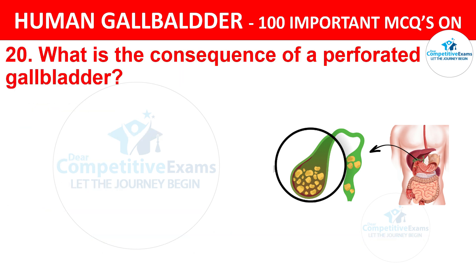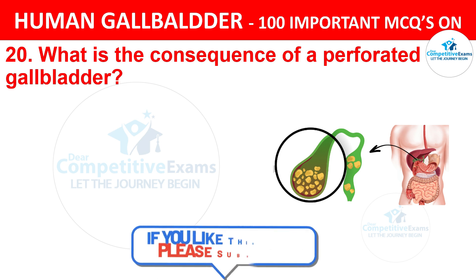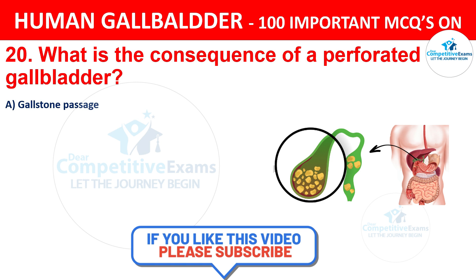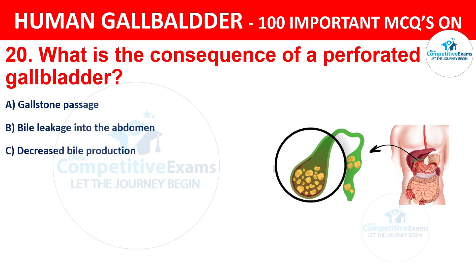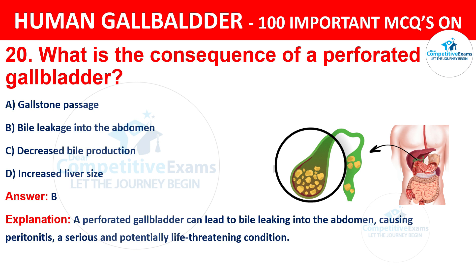Question 20: What is the consequence of a perforated gallbladder? Options are: A) Gallstone passage, B) Bile leakage into the abdomen, C) Decreased bile production, D) Increased liver size. The correct answer is B, bile leakage into the abdomen. A perforated gallbladder can lead to bile leaking into the abdomen, causing peritonitis — a serious and potentially life-threatening condition.